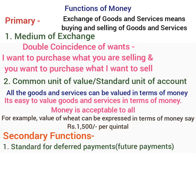The first secondary function is Standard for Deferred Payment. Deferred payments are those payments which are to be made in future, also known as contractual payments. Loans and borrowings requiring future repayments are quite difficult in the barter system as there is no standard basis for future payments. Borrowings in terms of commodities can be paid back with higher units of that commodity for compensating interest, but the quality of paying goods may not be the same as borrowed goods and its value may also change. Money can be easily used as a standard for future payment as its value remains stable.